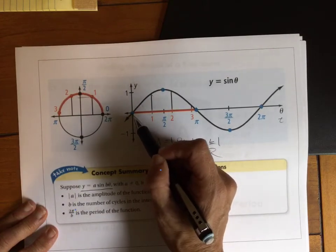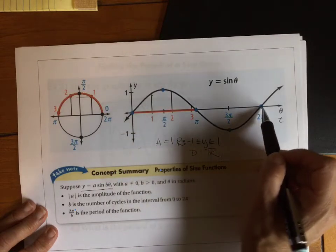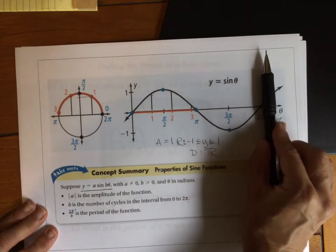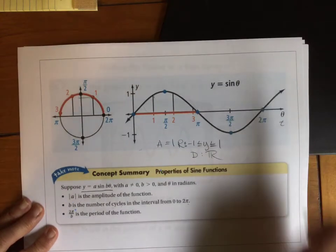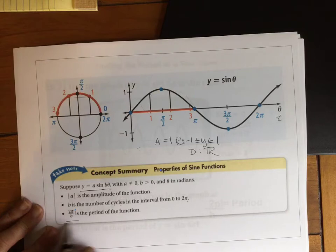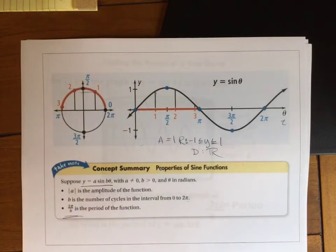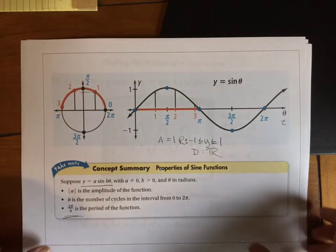I start at 0, I go up, back down to 0, come down and back up to 0. That's one cycle. So there's one cycle from 0 to 2π. And then 2π over b, and this is really important, is the period of the function. Go ahead and pause if you need to take notes on this.